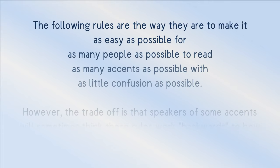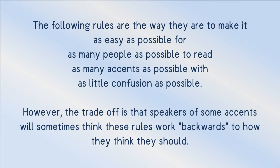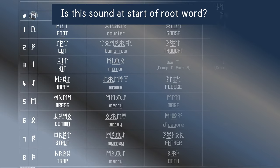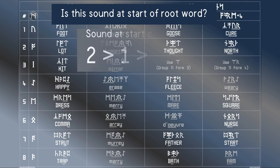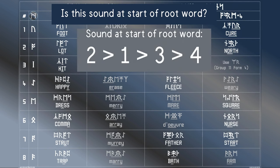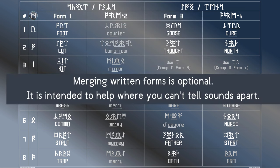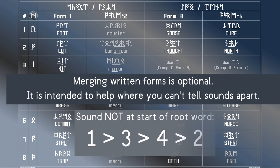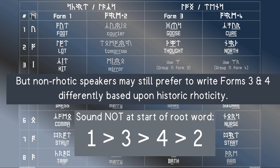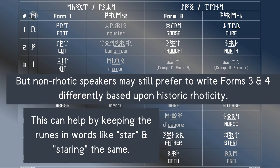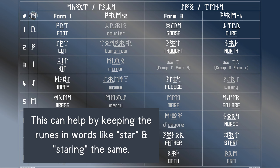That's all the main sounds covered. Now, what do you do if the vowels in two keywords sound the same? First, ask yourself: is this sound at the start of a root word? If yes, then rank the forms as 2, 1, 3, 4. If no, then rank them as 1, 3, 4, 2. Then ask: of the keywords that sound the same, which one's form is ranked highest? If their forms are different, use the form that is ranked highest.